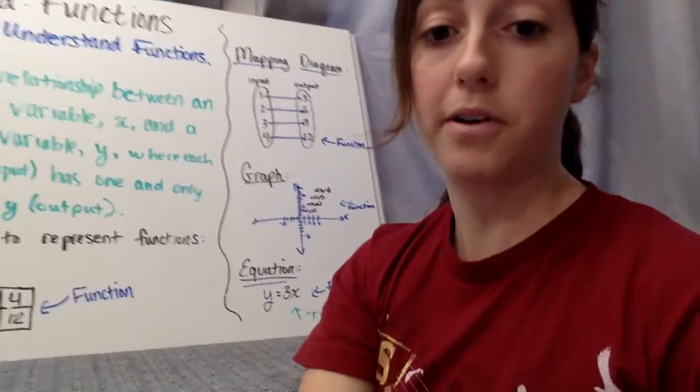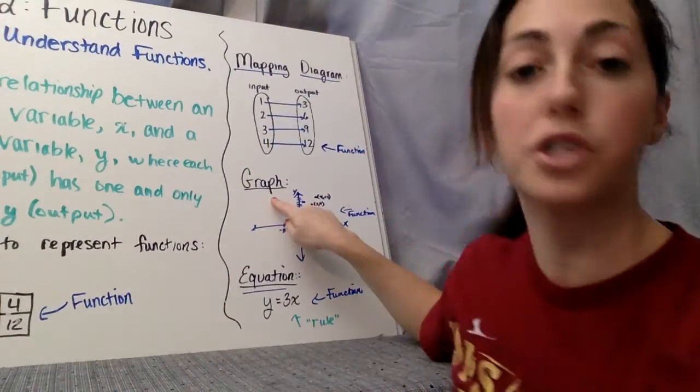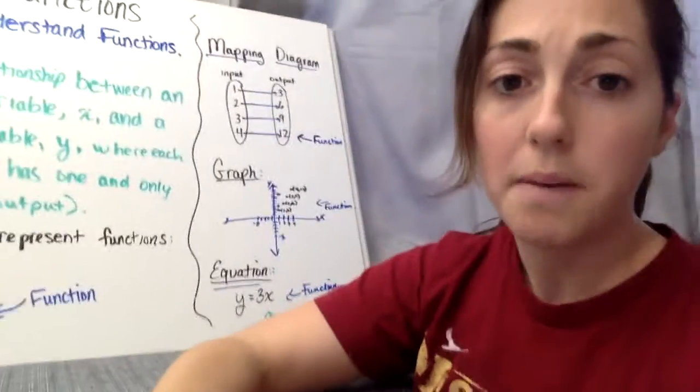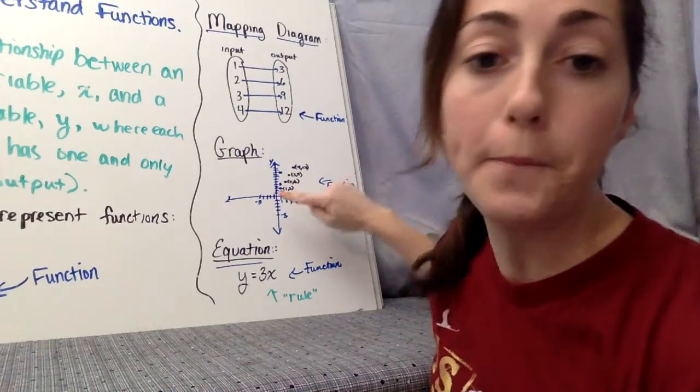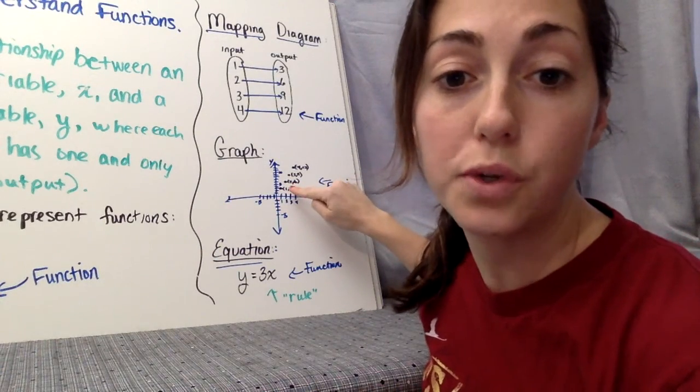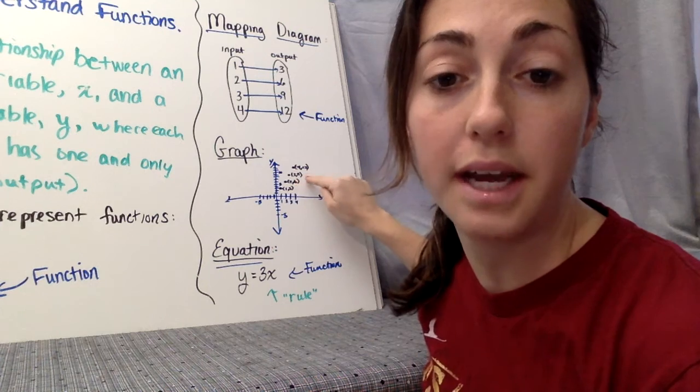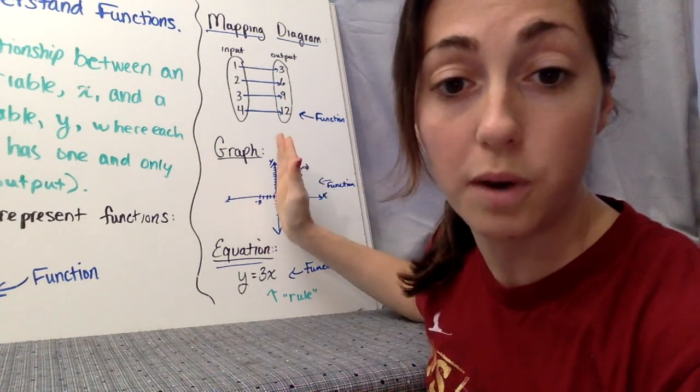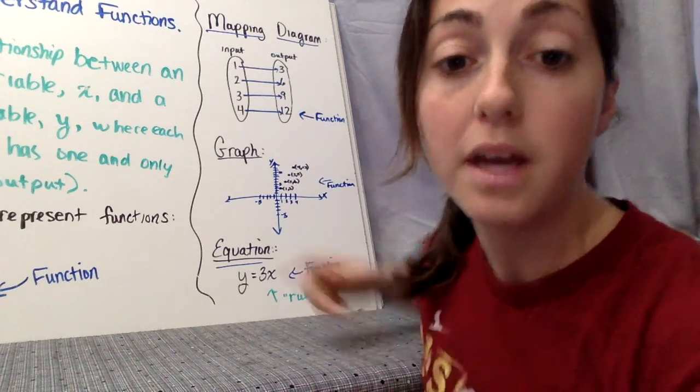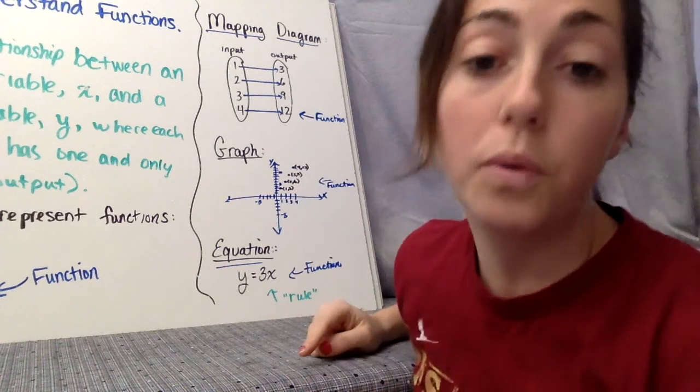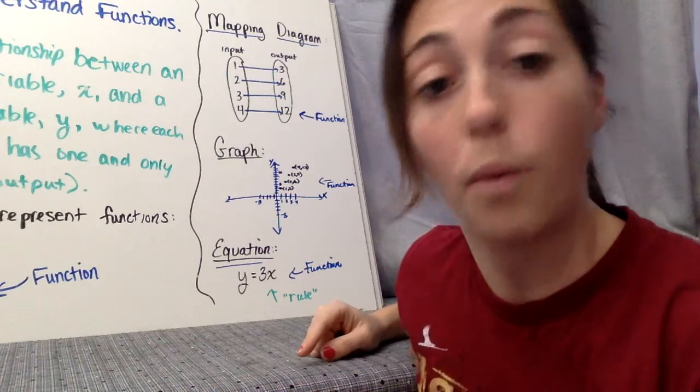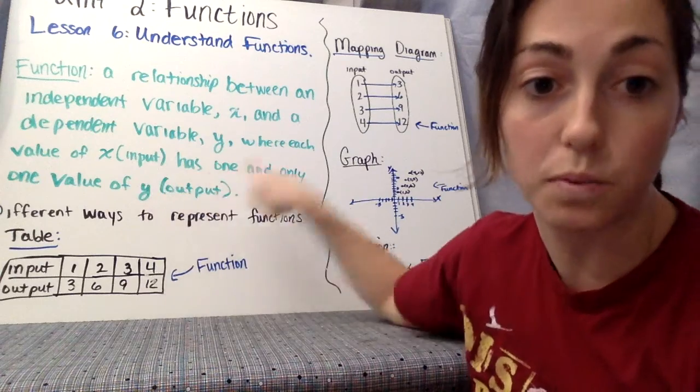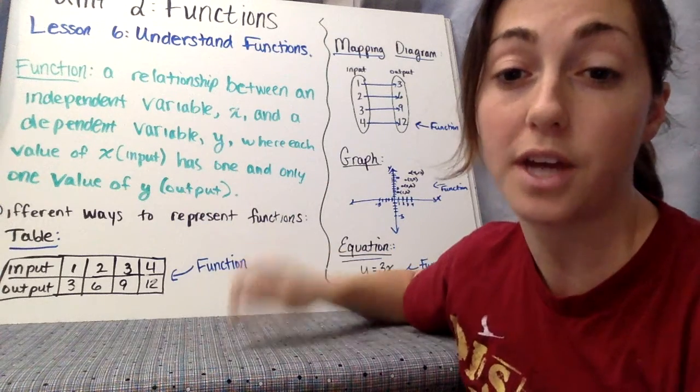Okay, another way to represent a function is a graph. So here I plotted those four points. It's hard to see, but it is those same four points that we've been talking about. We have 1, 3, 2, 6, 3, 9, and 4, 12 graphed here. We know this is a function because if we do our vertical line test, each x value can only have one y value. Going back to our definition, each value of x has one and only one value of y.